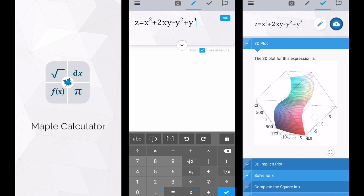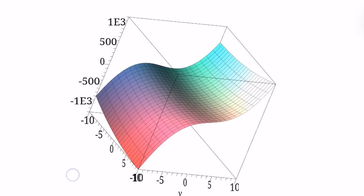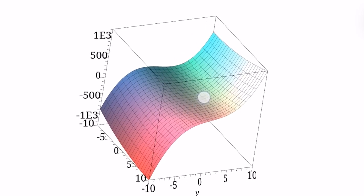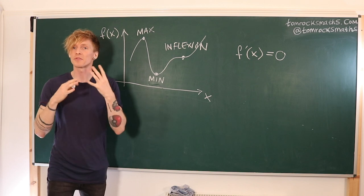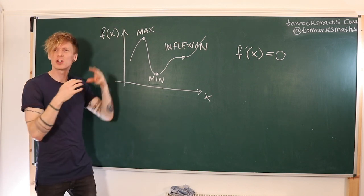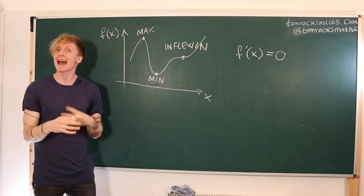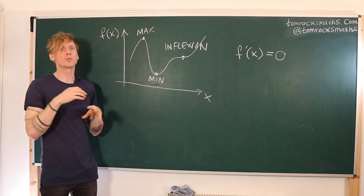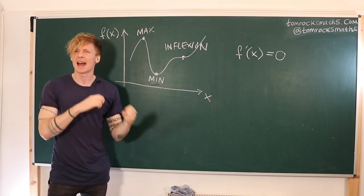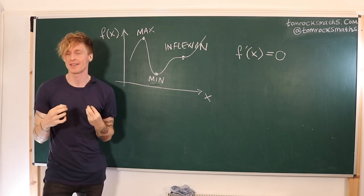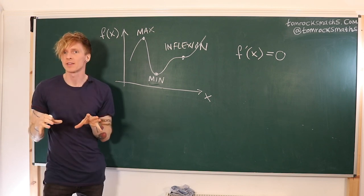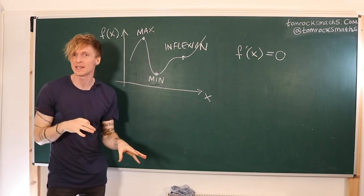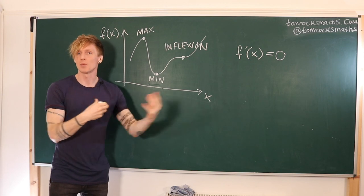The example I have here is z equals x squared plus 2xy minus y squared plus y cubed. Looking at the 3D plot we can see that it appears to go flat around the center, so zero could perhaps be one of our critical points. Remember that for a function of one variable the function was not changing in the x direction at our critical point. So in two dimensions this means we need our function to not be changing in the x direction and also to not be changing in the y direction.